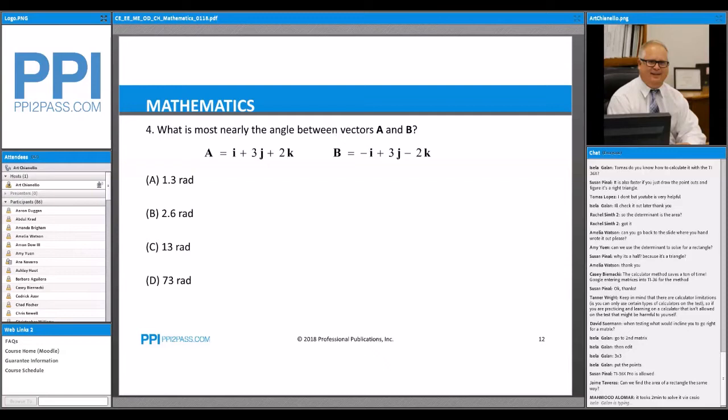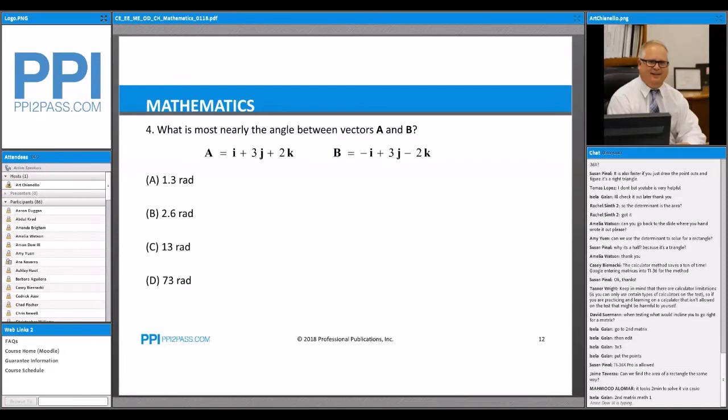The angle between two vectors, when that comes up, we should be thinking of a dot product, right?